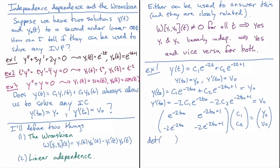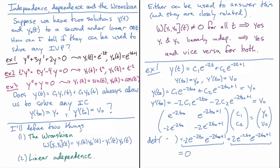The determinant of this matrix is e^(−2t₀) times −2e^(−2t₀+1), minus −2e^(−2t₀) times e^(−2t₀+1), which gives plus 2e^(−2t₀)·e^(−2t₀+1). You can see this expression is exactly the negative of the other, so the determinant equals zero. Therefore these do not form a general solution.